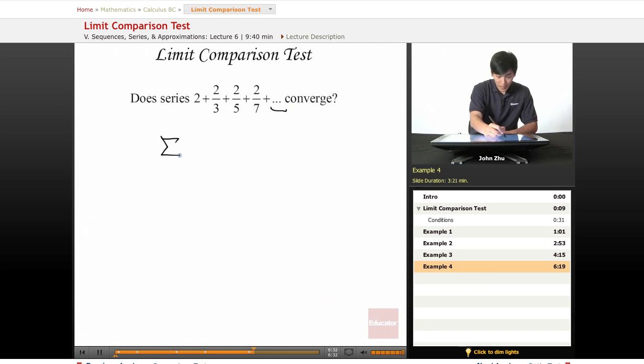We know that it is a series from n equals 1 to infinity. We know the a term is going to be 2 because the a is always the first term. So 2 times...